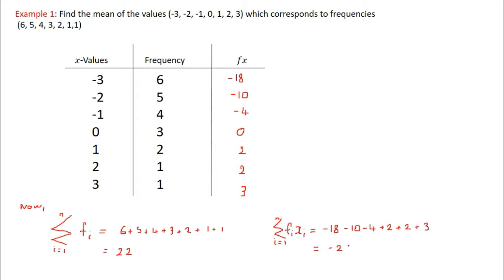So now we have our x bar is equal to the summation of f x over the summation of f, and that's just equal to minus 25 over 22, and that's just equal to minus 1.14, which is our x bar.